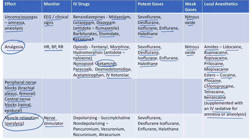For muscle relaxation: IV drugs include depolarizing relaxants like succinylcholine, and non-depolarizing relaxants like pancuronium, vecuronium, rocuronium, and atracurium. Inhalational agents such as sevoflurane, desflurane, isoflurane, enflurane, and halothane can also cause muscle relaxation.